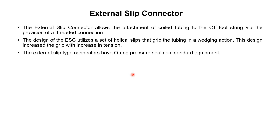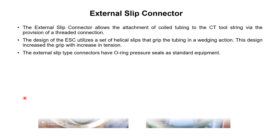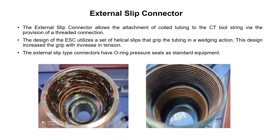The external slip type connector has O-ring pressure seals as standard equipment. In addition to providing a threaded connection, any connector must also provide a pressure seal. In the external slip connector, this pressure seal is provided with the help of O-rings. Here we can see the bottom sub of the external slip connector with O-rings installed in it. These O-rings can be changed after the job.